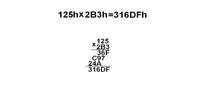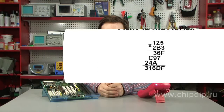Multiplication of 125 by 3 gives us 36F. Then we multiply 125 by B. As a result of this multiplication, we get C97. When we multiply 125 by 2, we get 24A. As we add the numbers, we get the result 316DF.